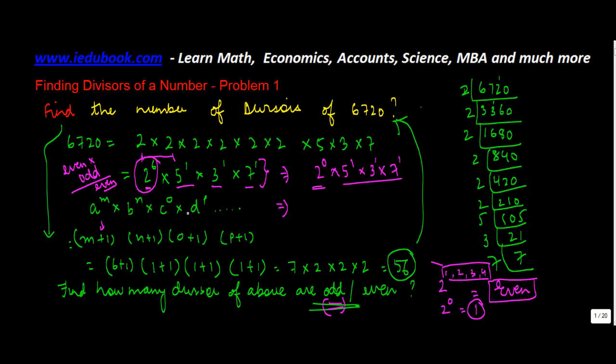Applying this formula, now what will you get? You will get 0 plus 1, right? 1 plus 1, 1 plus 1, 1 plus 1. So 2 into 2 into 2 into 1 is equal to 8. So out of these 56, 8 are odd divisors.